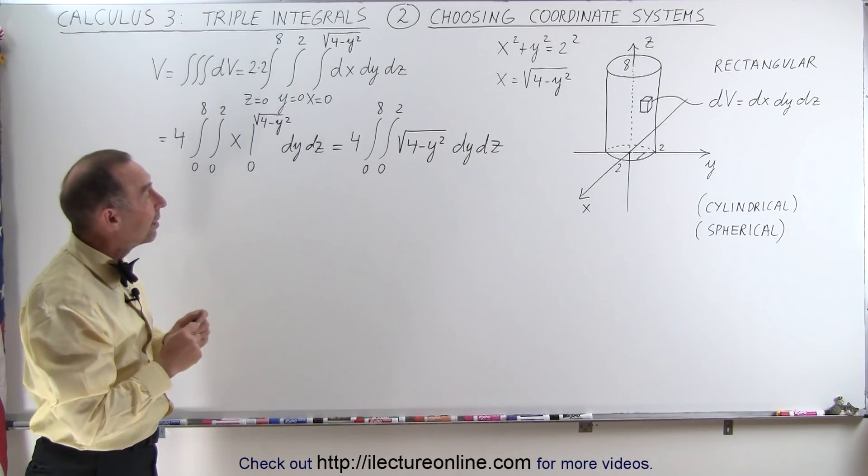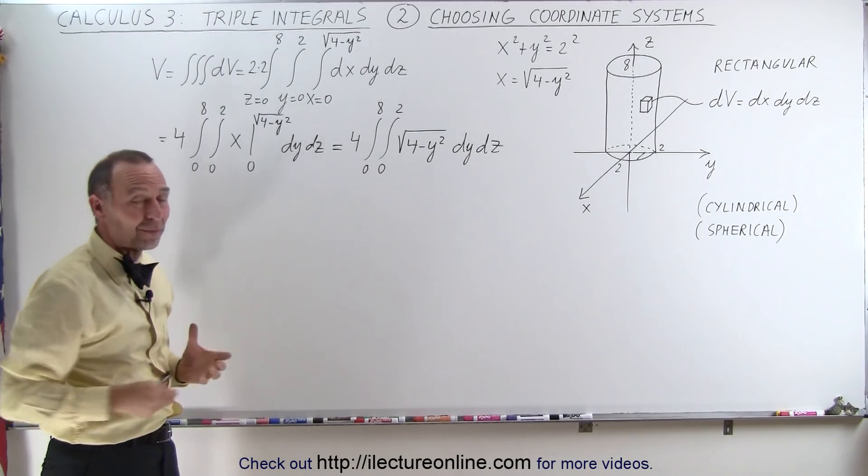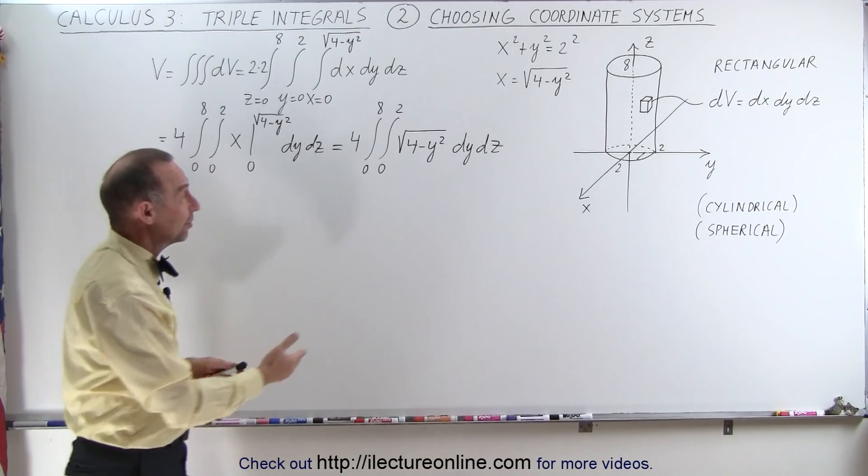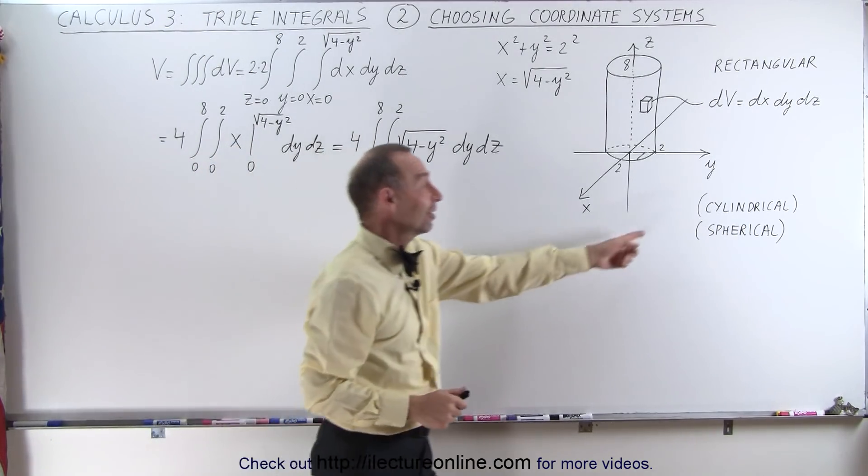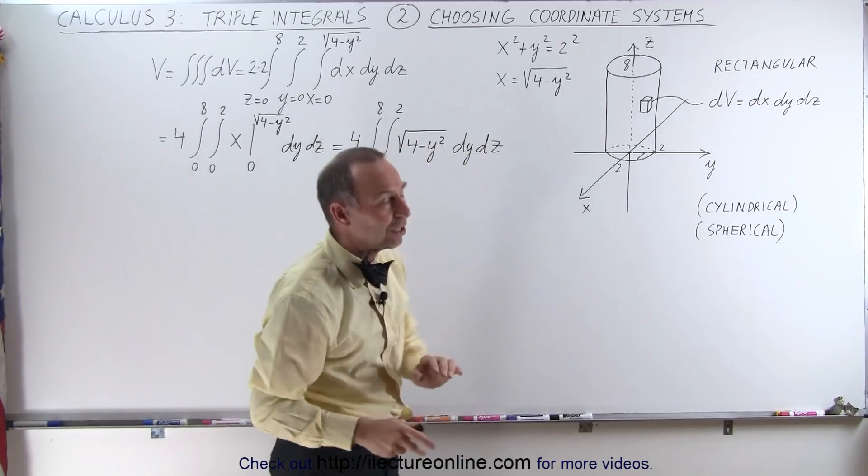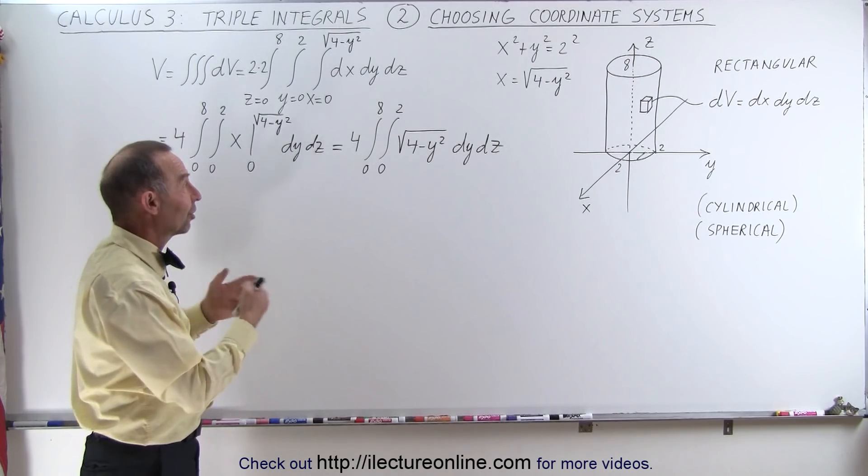Now this is where you can see that using rectangular coordinate system for a cylindrical shaped object is not the ideal situation because this ends up being a very difficult integral to execute. That's why using cylindrical systems, it would be a whole lot easier. You'll see that in the next video. But we started this route, so let's complete it.